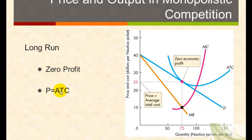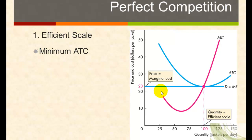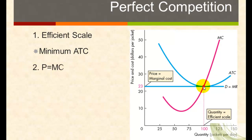This is a graph for a typical firm in a perfectly competitive industry. The demand function is horizontal since firms are price takers, and this is also equal to marginal revenue. The equilibrium quantity is where marginal revenue equals marginal cost — in this case 100 — which is also the efficient scale of production, the minimum point of the average total cost function. Price equals marginal cost, which also equals average total cost.